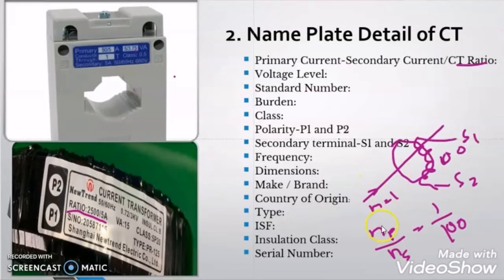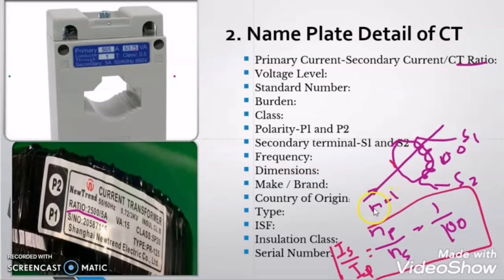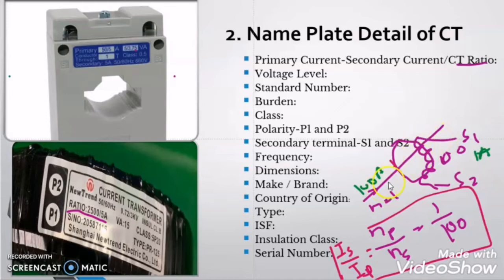So what we derive here is that the number of turns in the primary winding is only 1 conductor and the number of turns in the secondary winding of the current transformer is 100. So NP by NS is equal to 1 by 100, and we can say that NP by NS is equal to IS divided by IP. From here we can conclude that when there is 100 Ampere of current flowing through the primary winding — that is the single conductor — then there will be 1 Ampere of current in the secondary winding. This CT is stepping down the primary current 100 times in its secondary winding.